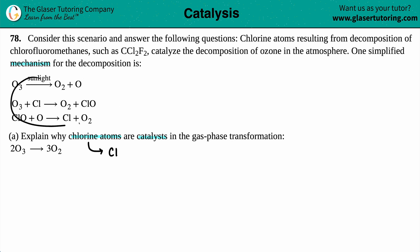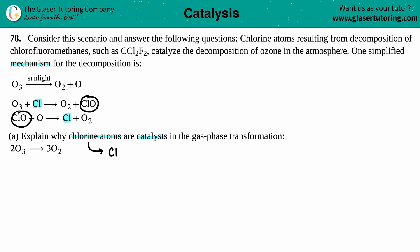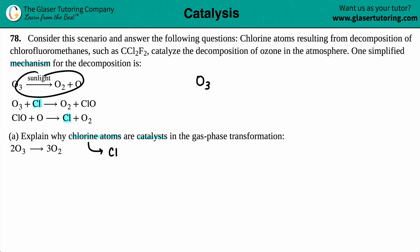We have to go back to our mechanism to see where the chlorine atoms are mentioned. The chlorine atoms are mentioned in the second step, which has Cl on the reactant side and Cl again on the product side. I am not talking about the ClO, because that's a compound — not just the chlorine atoms. So step two is: O₃ + Cl → O₂ + ClO.